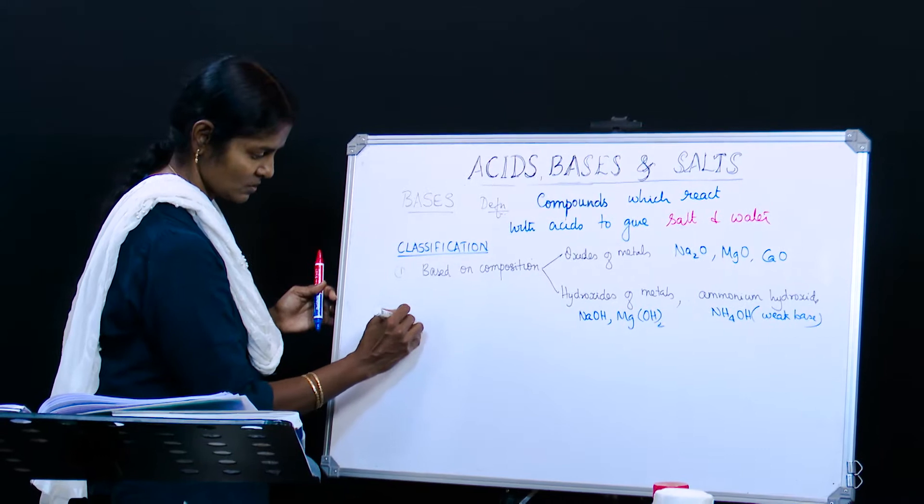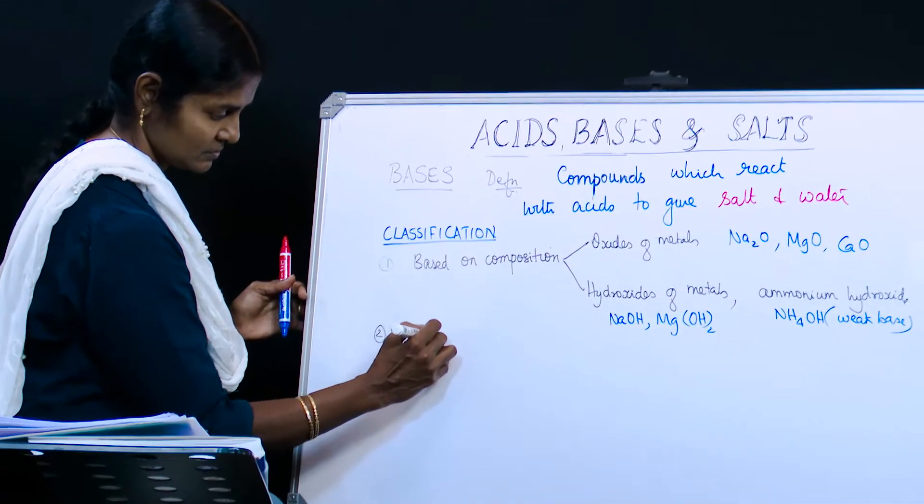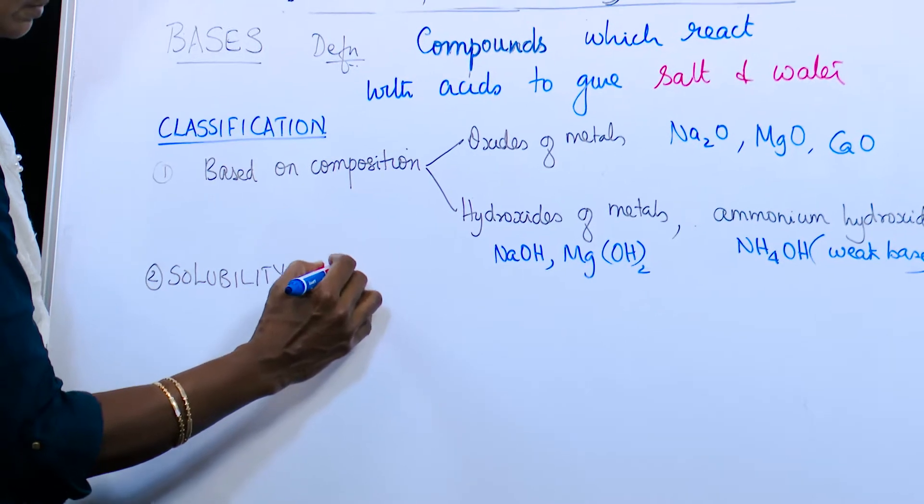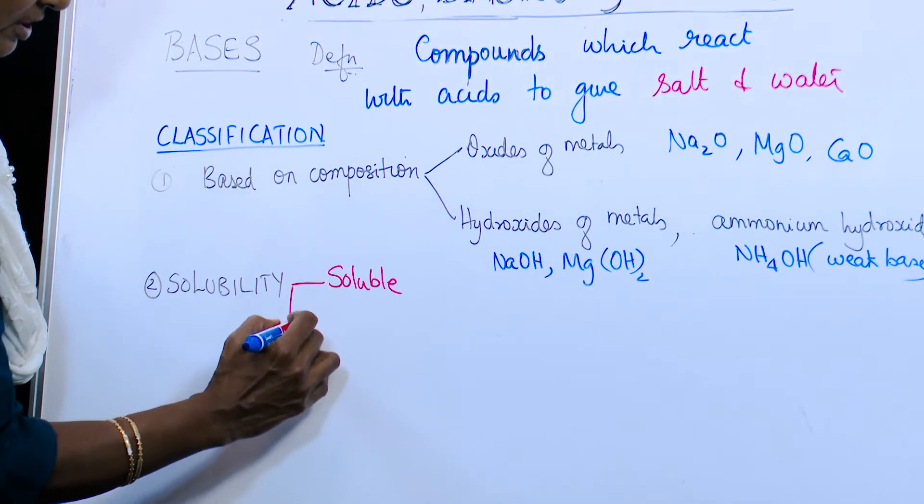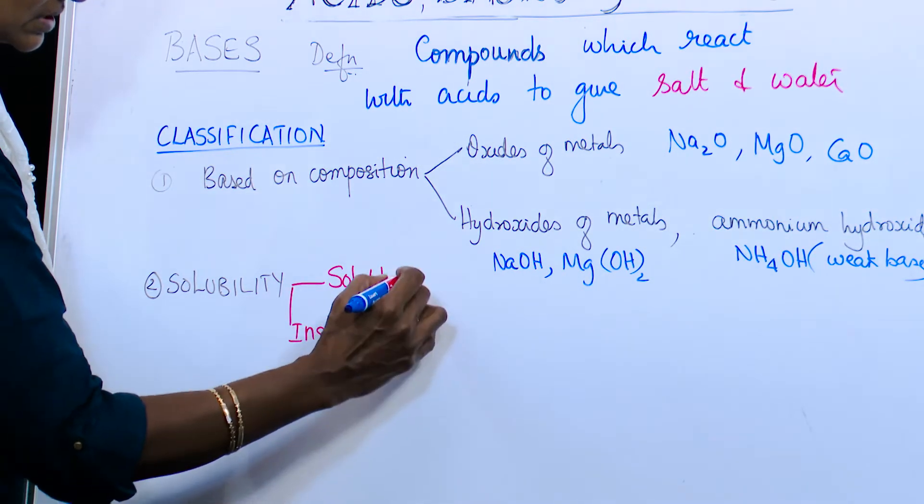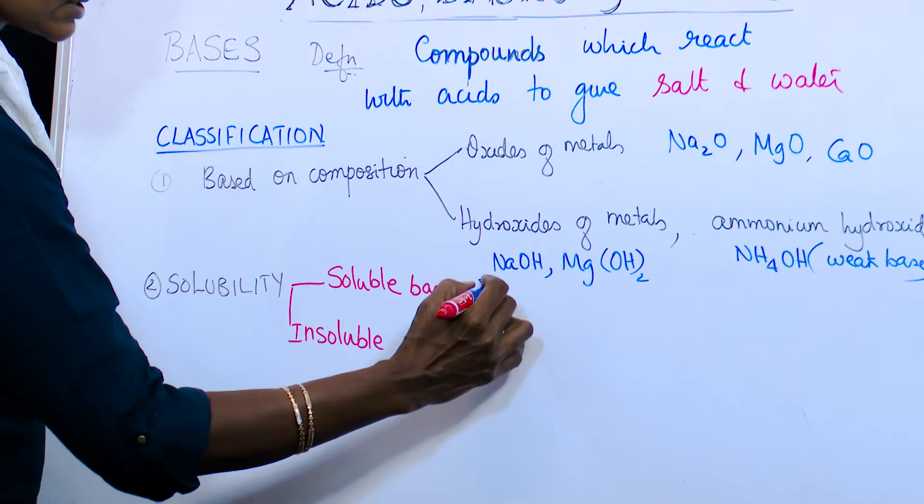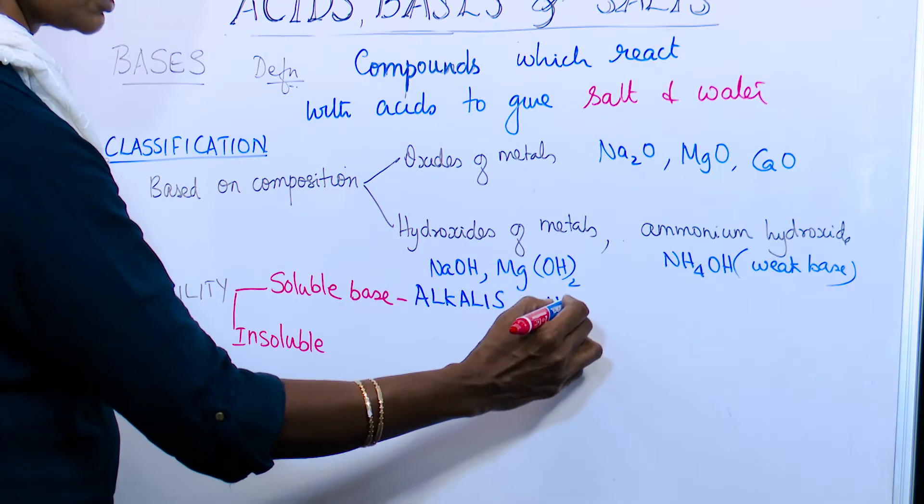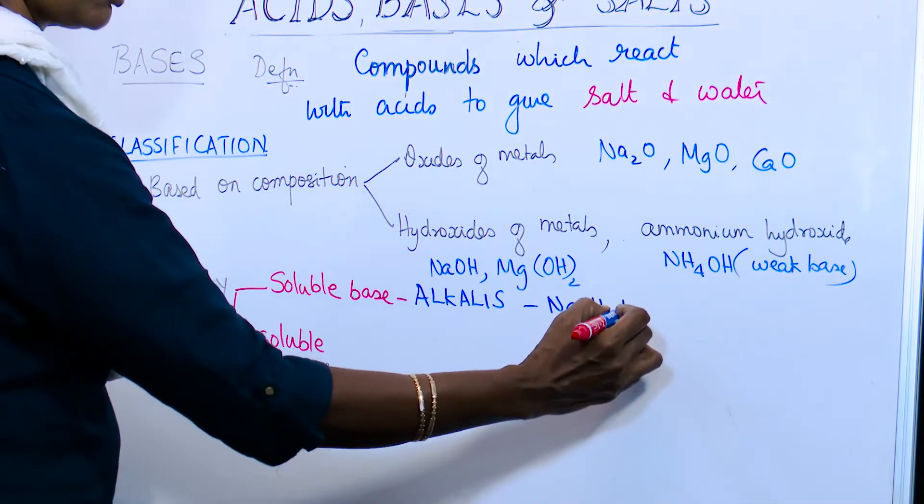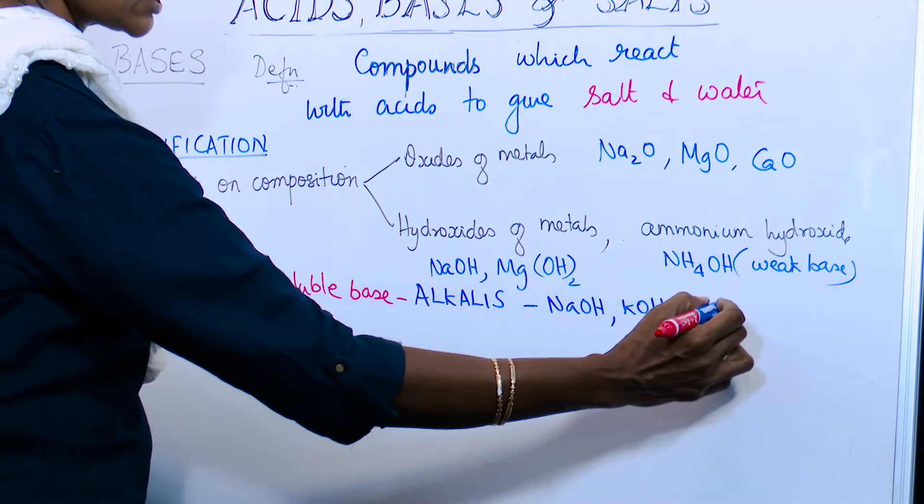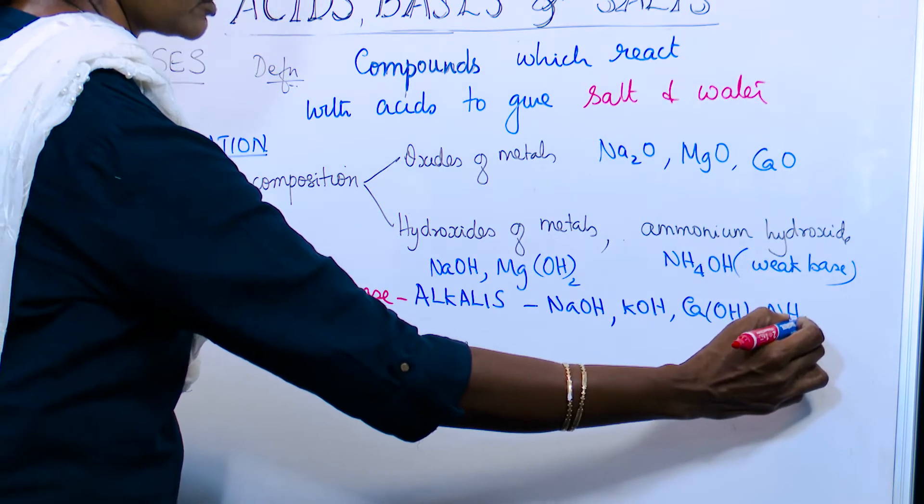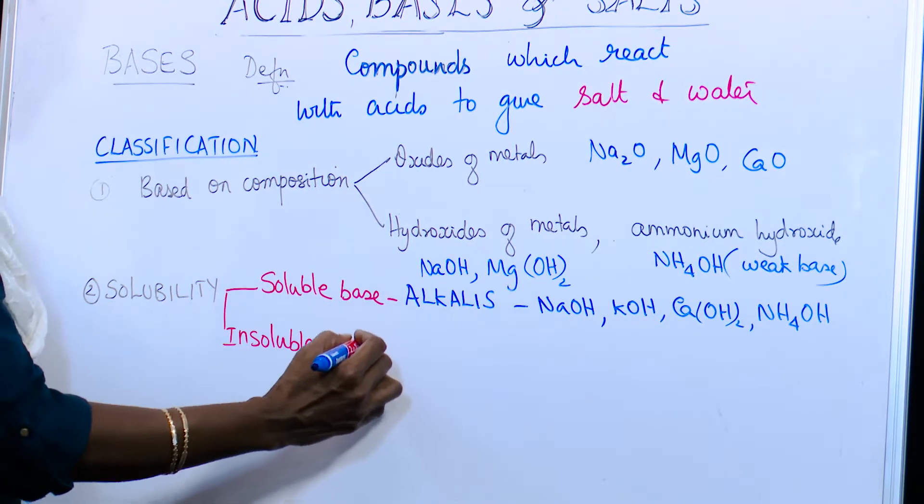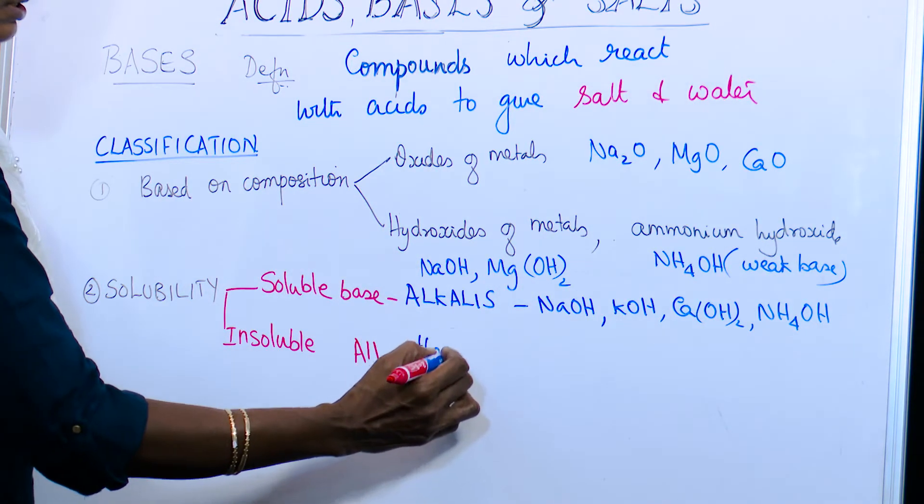The next one is based on solubility. Some are soluble, some are not soluble. Very few are soluble. Soluble bases are also called alkalies. Examples: sodium hydroxide, potassium hydroxide, calcium hydroxide, and ammonium hydroxide. If you remember these 4, these are called alkalies. All other bases are insoluble.